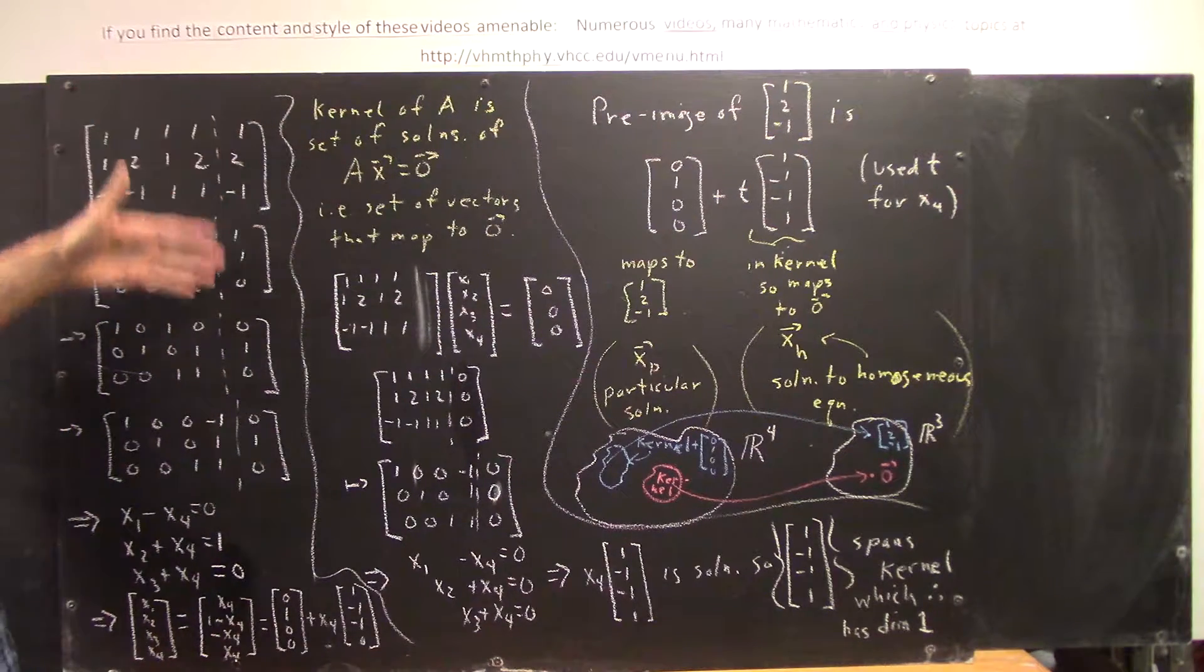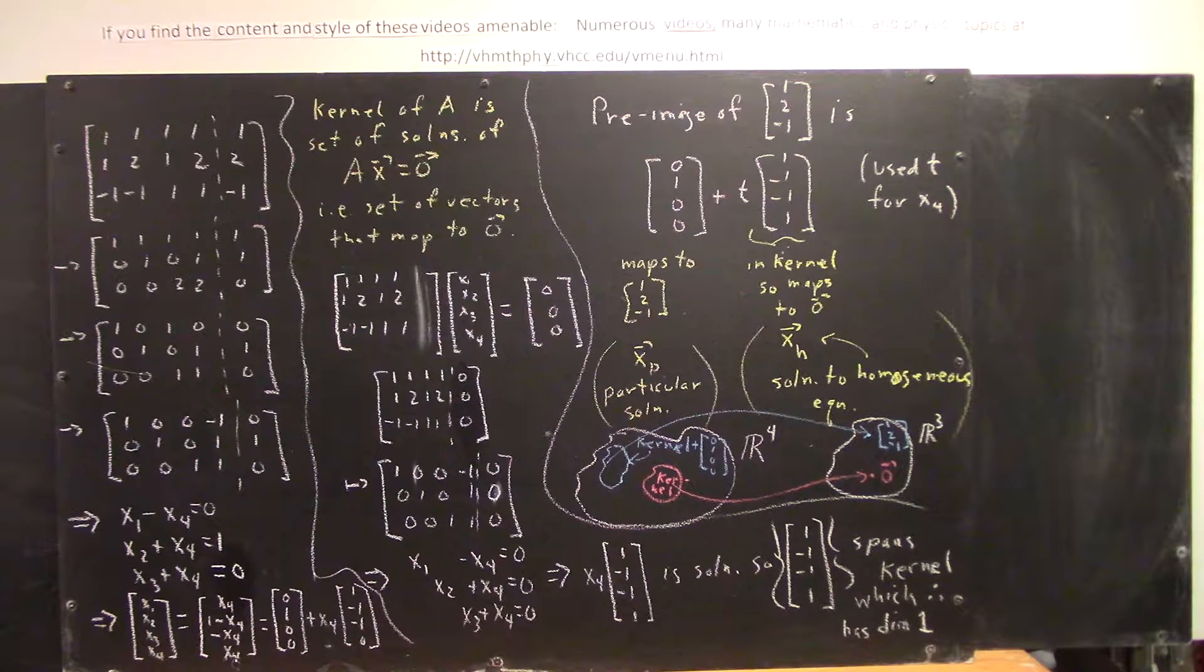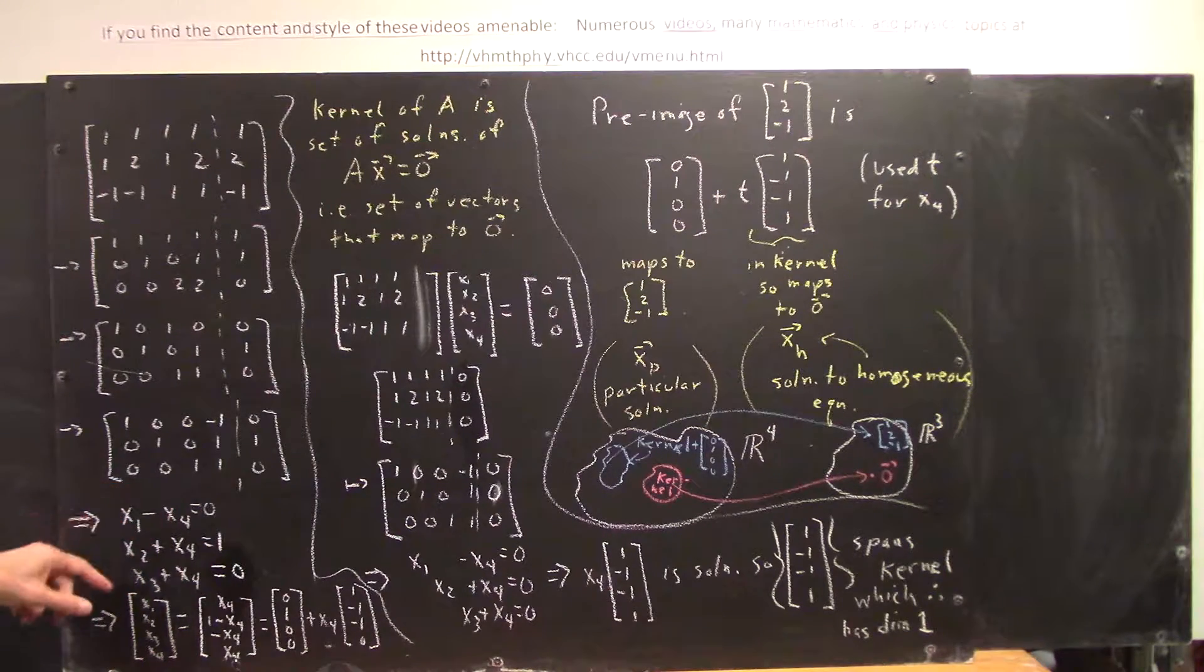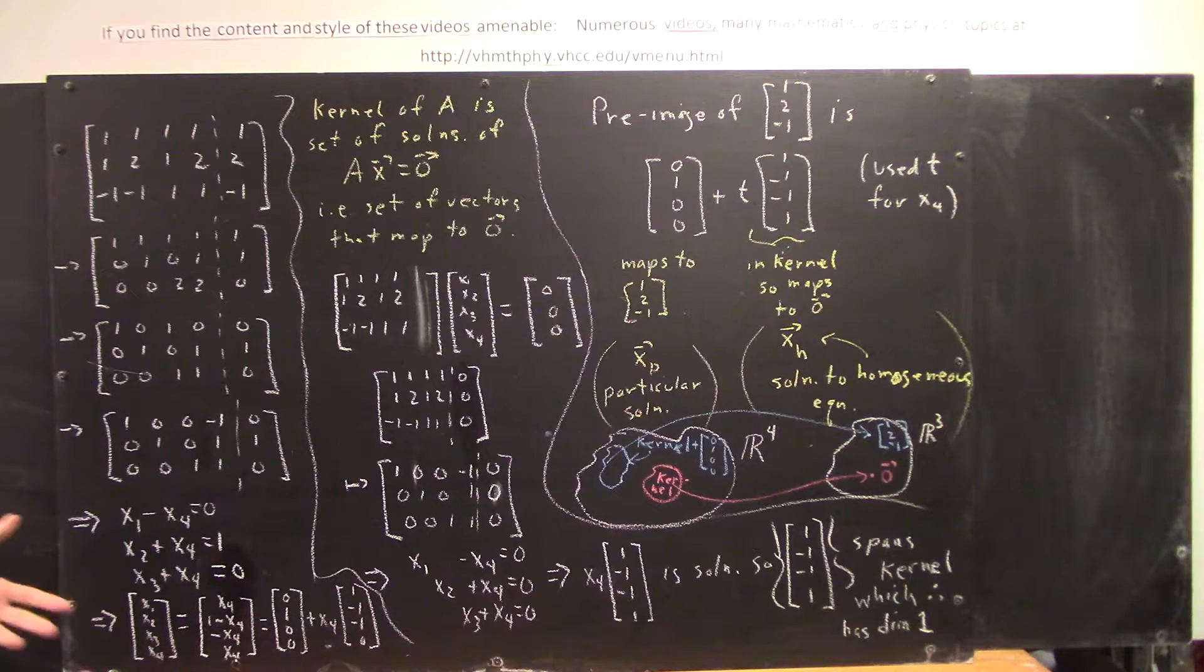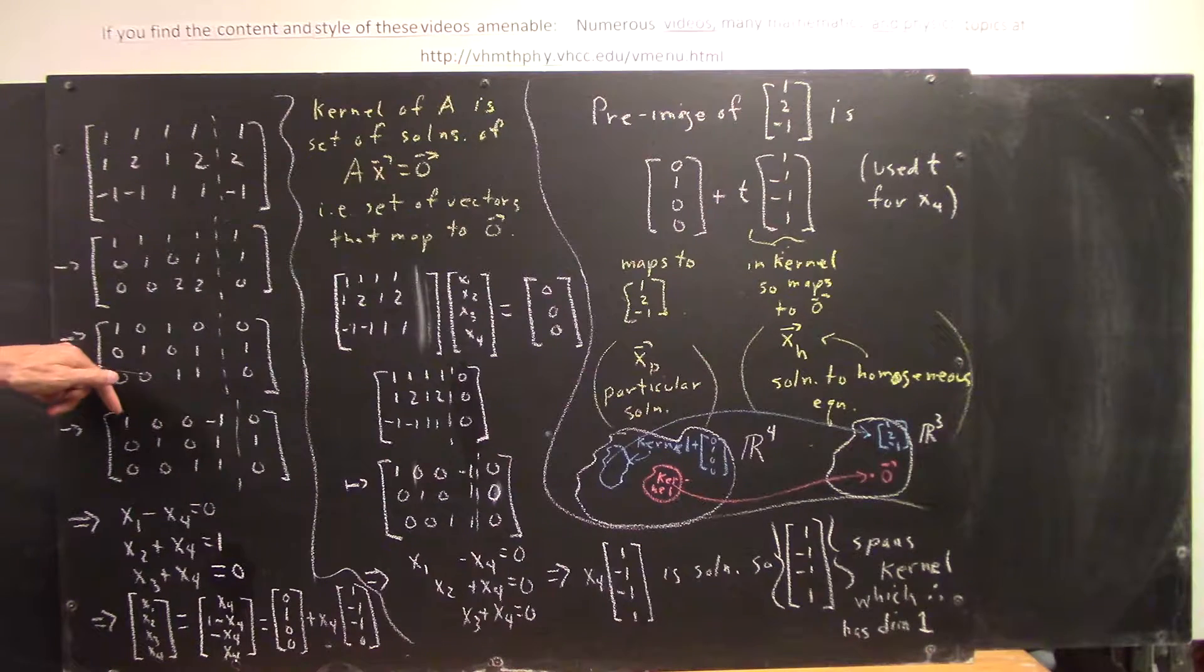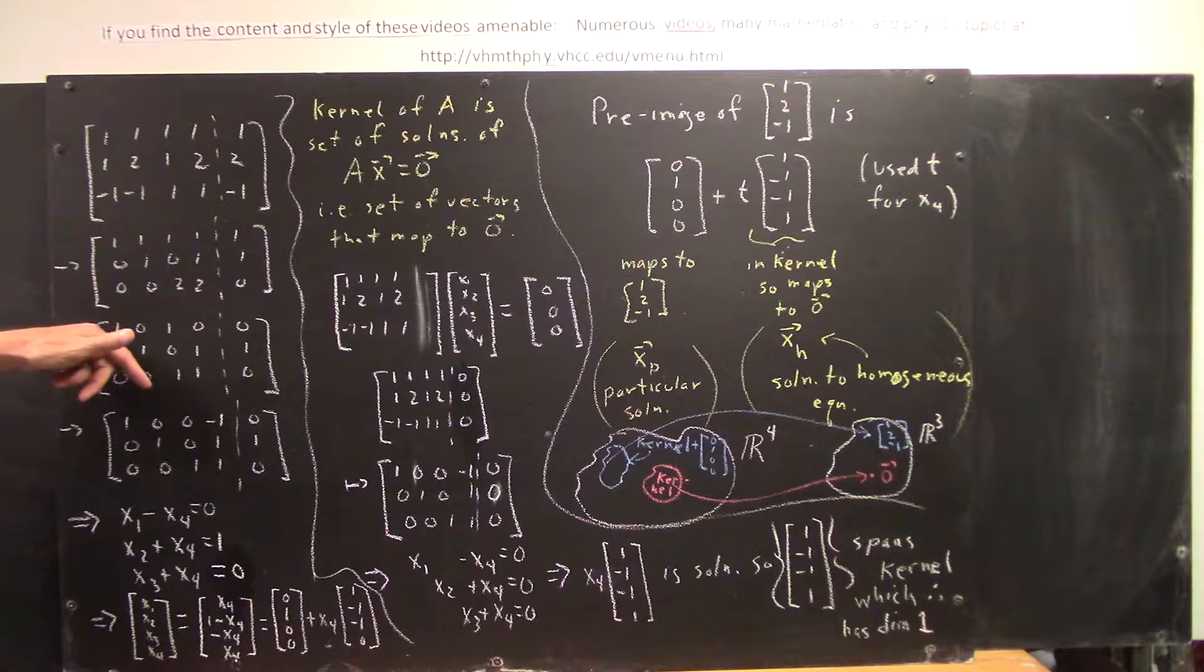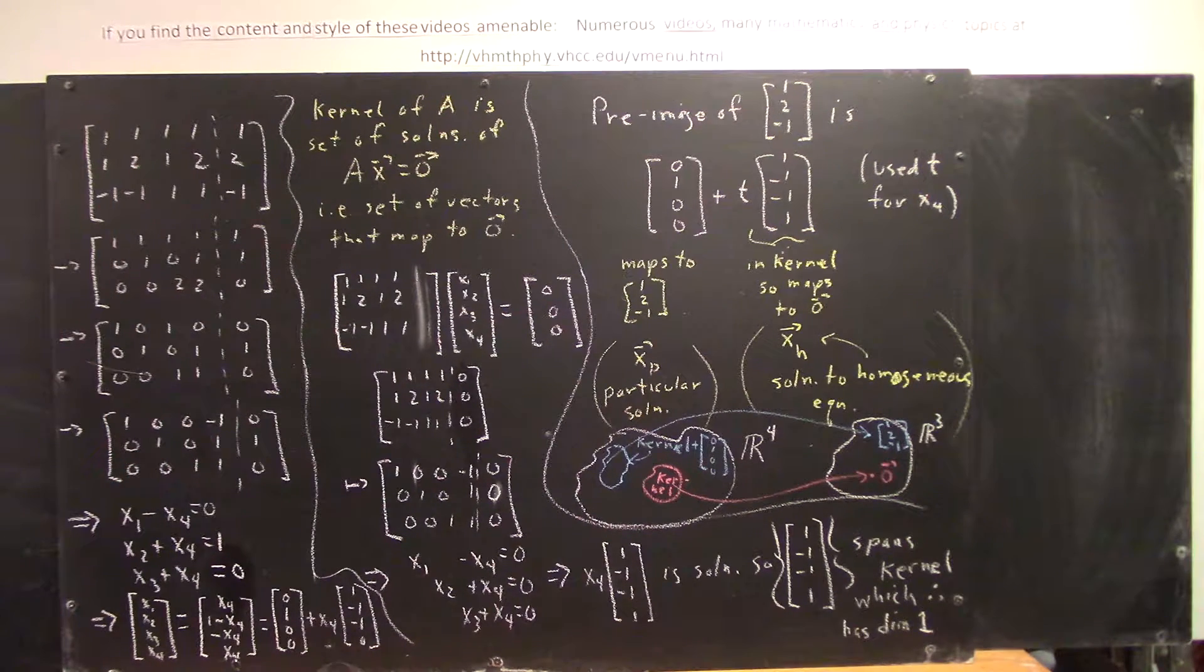I went ahead and reduced it step by step, and we got this. And then we wrote down what the rows of the matrix are telling us. We wrote down the equations corresponding to the rows where we're assuming that the first row represents the coefficients of x1, second row of x2, third row of x3, fourth row, the coefficients of x4.